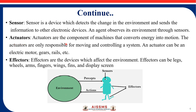Actuators are the components of machines that convert energy into motion. Actuators are responsible for moving and controlling a system. An actuator can be an electric motor, gas, rails, etc. Effectors are devices which affect the environment. Effectors can be legs, wings, arms, fingers, fins, and display screens.